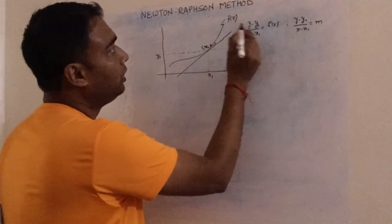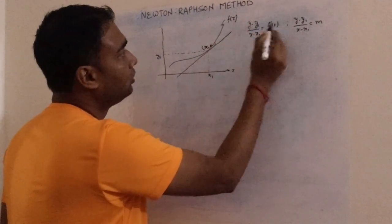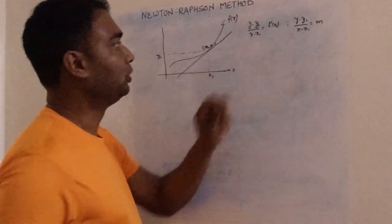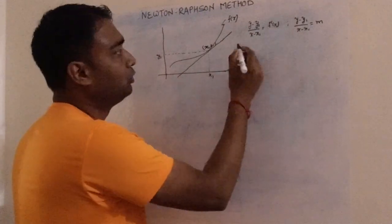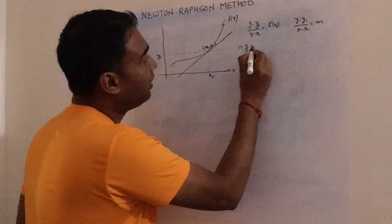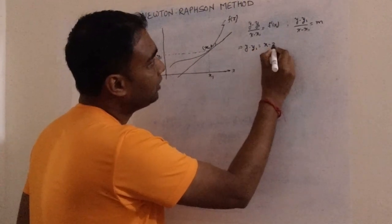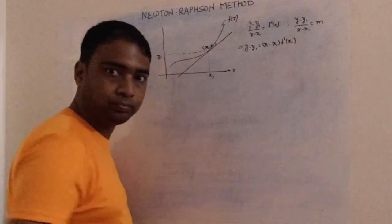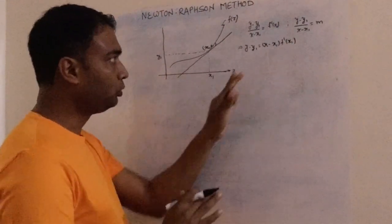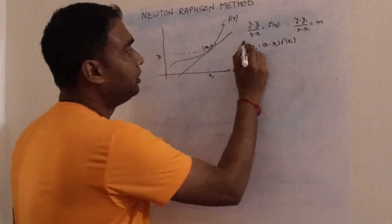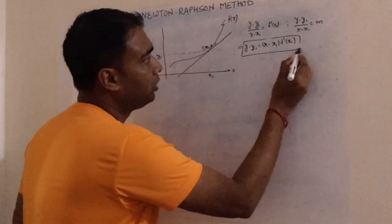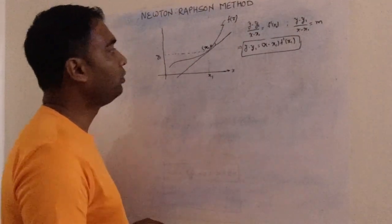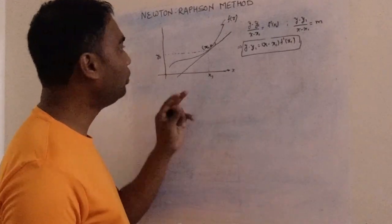So the derivative at x1 is f'(x1), which gives us the slope of the tangent. Using the point-slope form, the equation of the tangent line is: y − y1 = f'(x1) · (x − x1).